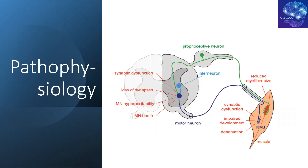Regarding pathophysiology, a cross-section of the spinal cord shows anterior horn cells and the dorsal root, with motor roots going into the muscle. There is motor neuron hyperexcitability resulting in early death of motor neurons. At the same time, there is neuromuscular junction disruption resulting in impaired development and denervation, causing muscle shrinkage. Some muscles may try to compensate by hypertrophy, so on histopathological section we see atrophic fibers alongside hypertrophic fibers.